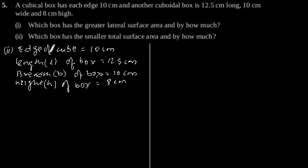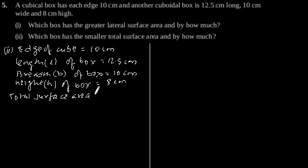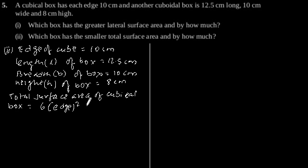Now the second part: which box has the smaller total surface area and by how much? So let's find out the total surface area of the cubical box, which is equal to 6 into h squared, which is equal to 6 into 10 squared, which gives 6 into 100, which is equal to 600 cm squared.